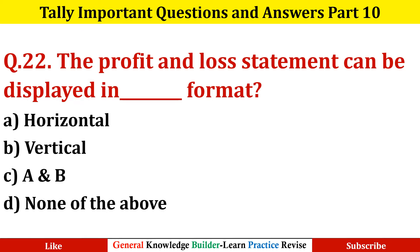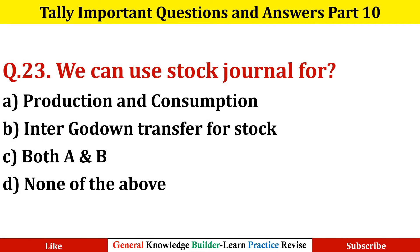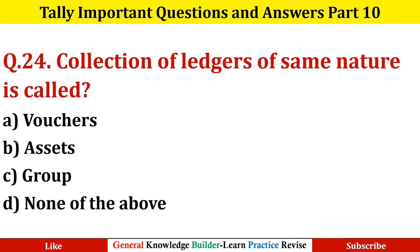Question number twenty-two: The Profit and Loss statement can be displayed in which format? Option C: A and B. Question number twenty-three: We can use Stock Journal for? Option C: Both A and B. Question number twenty-four: Collection of ledgers of the same nature is called? Option C: Groups.